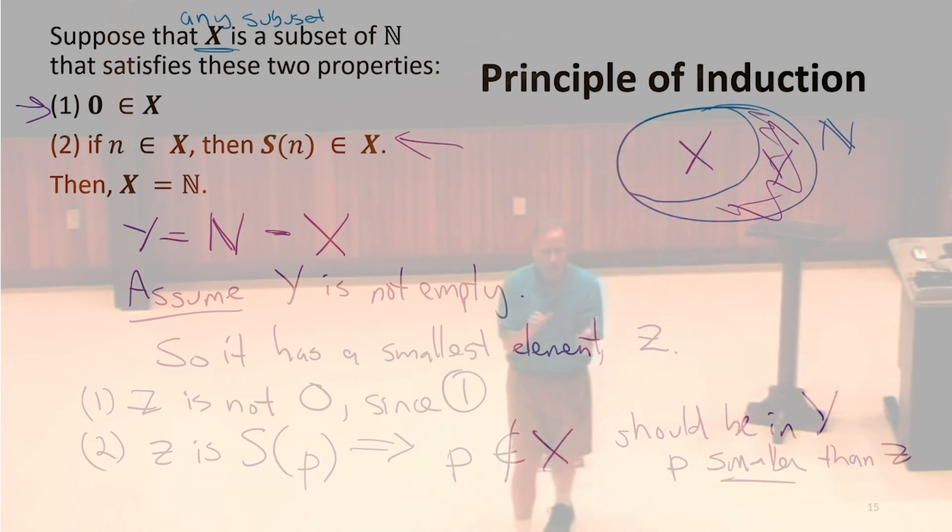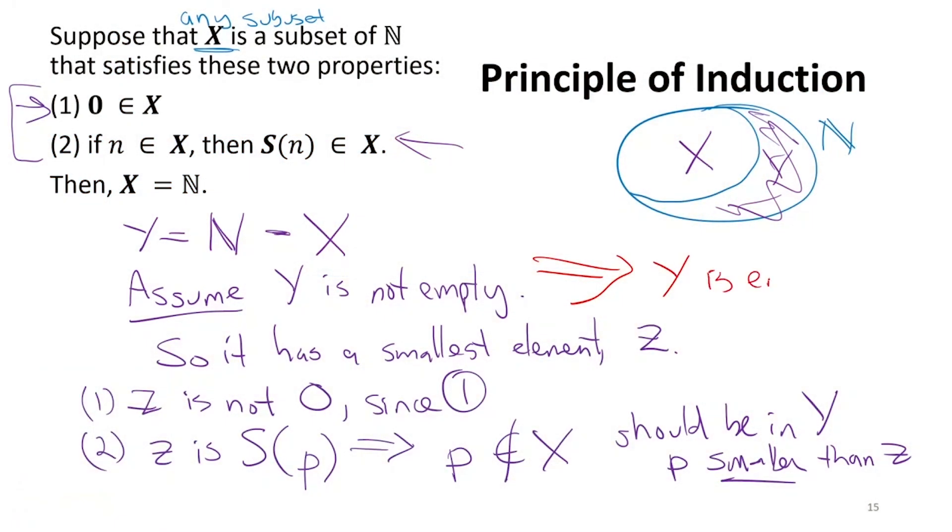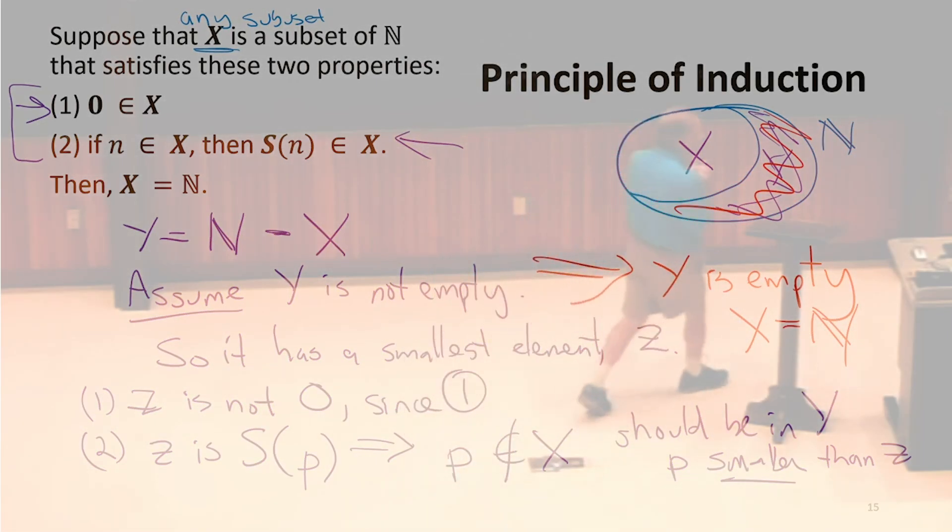We started with this assumption that Y is non-empty, and we used the definition of the natural numbers and the two properties here to get a contradiction. So that means our assumption is false, and our assumption was Y is non-empty. Well, if Y is non-empty is false, that means Y is empty. And if Y is empty, then X equals N. Those are the same sets. What we've proven is now that any subset of the natural numbers that satisfies these properties is actually all the natural numbers. Is this enough to prove induction, to do proof by induction?